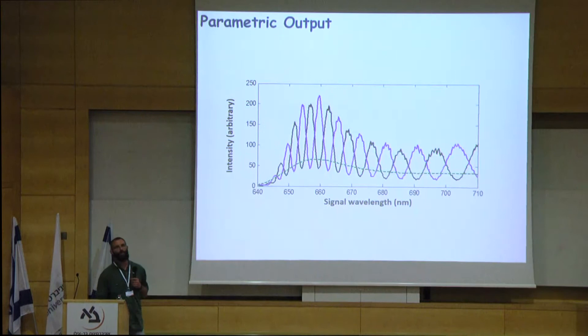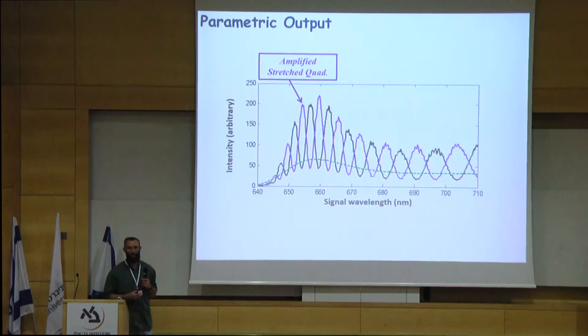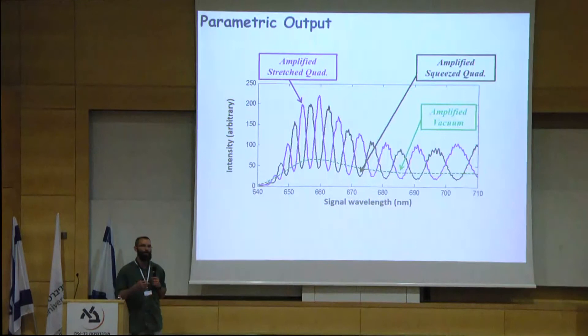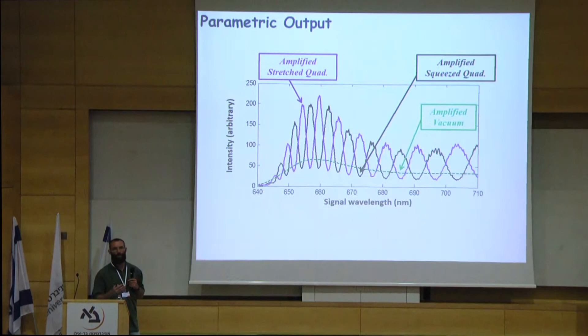Here is the raw output of the homodyne measurement. The maximum levels indicate the amplification of the stretched quadrature. The green dashed line is for vacuum input — when I block the signal and the idler and measure the spontaneous output, this is the vacuum level. And indeed, you can see that the minimum levels, which indicate amplification of the squeezed quadrature, are below the vacuum level. This is the raw output, and you can directly see 55 terahertz of squeezing in a single measurement.